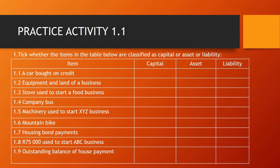To recap the three concepts covered so far: capital is the money or possessions a person needs to start their own business; assets are possessions that you own; and liability is money that you owe to other businesses or people. Now there is Practice Activity 1.1, which you need to do by yourself to see if you really understand these concepts. The instruction is to tick — using an X — whether the items in the table below are classified as capital, asset, or liability.